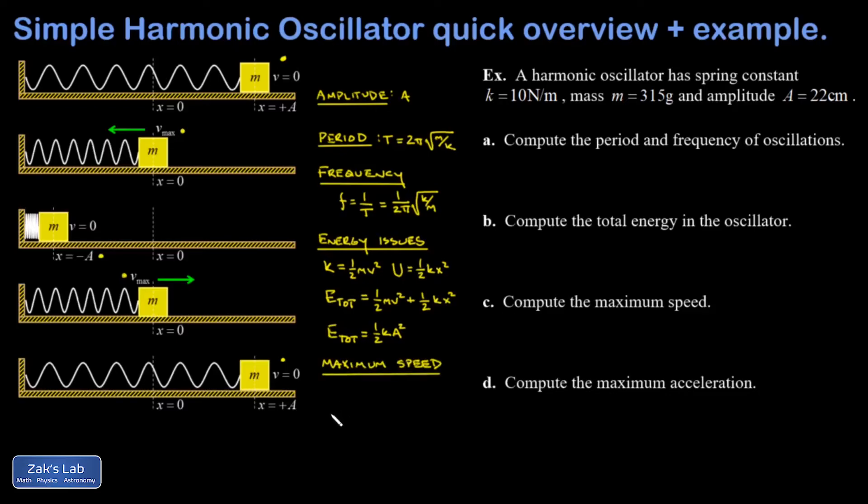Sometimes we're interested in finding the maximum speed of the harmonic oscillator, and that's just an energy conservation question. I could say the total energy is in the kinetic system when the speed is maximized, and that happens when the mass is passing through the equilibrium position where there's no spring potential energy being stored. Solving for v max, I divide by m and square root both sides, and I get square root k over m times the amplitude, which might be a handy formula.